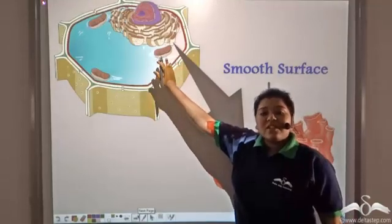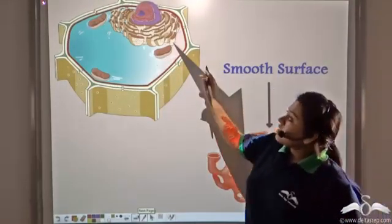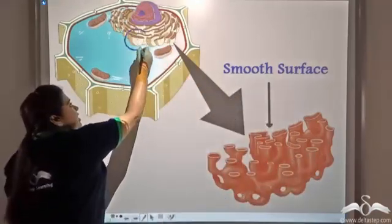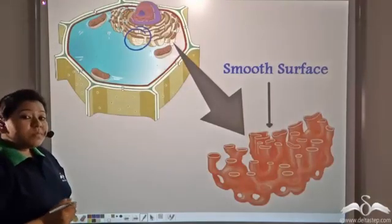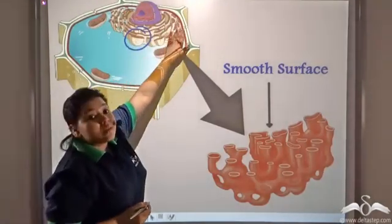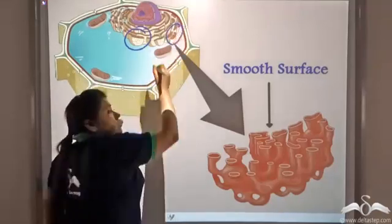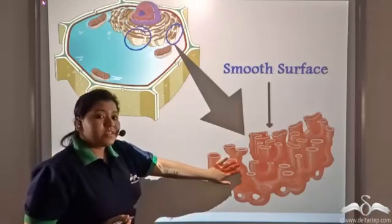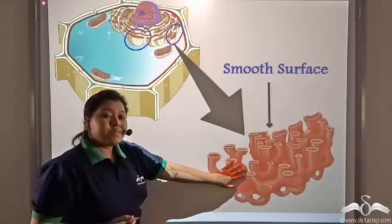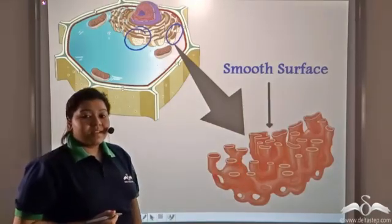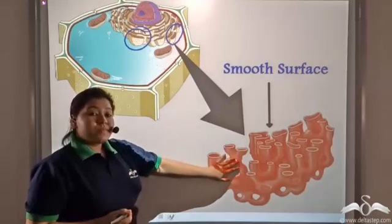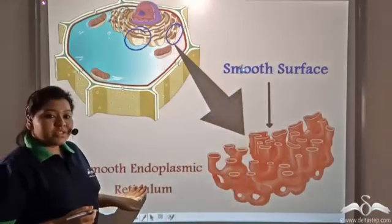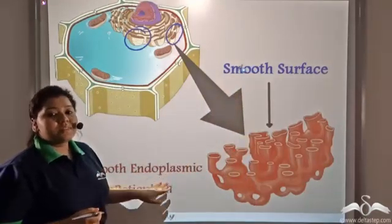Look at this picture carefully. The portion of the endoplasmic reticulum towards the nucleus is dotted with these bead-like ribosomes. But the portion away from the nucleus — if we zoom in — shows that the bead-like ribosomes are missing. Since they are absent, the endoplasmic reticulum has a very smooth appearance, and that is why this portion is known as the smooth endoplasmic reticulum.